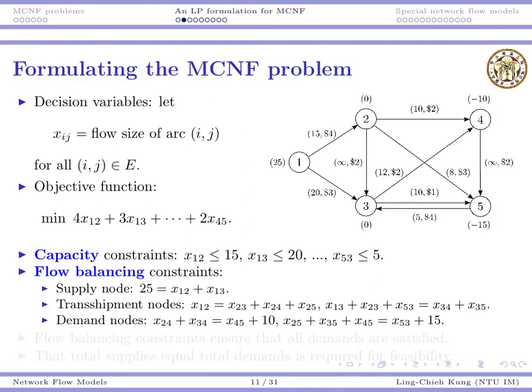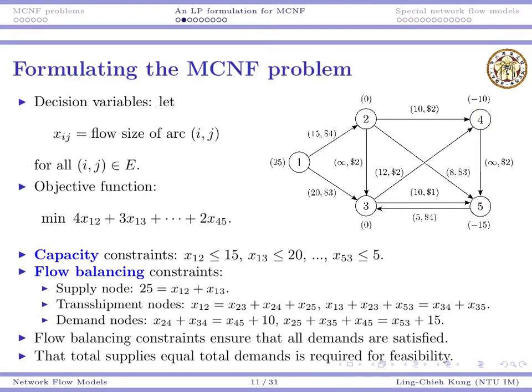So one thing to keep in mind is for demand nodes, there may still be outgoing arcs. And also for supplies, there may be incoming arcs. That's all possible.